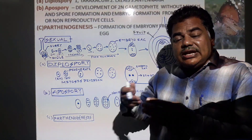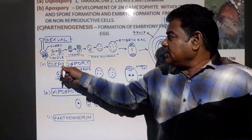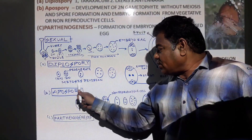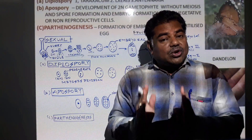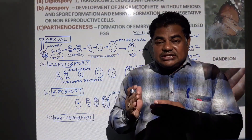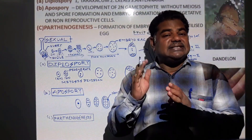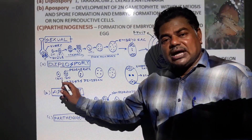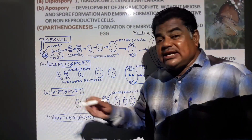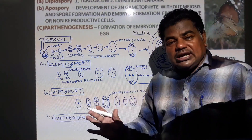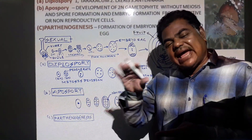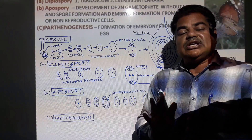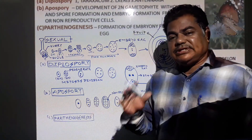Mitosis is equational cell division — the chromosome number does not reduce; it remains as it is. If the cell has 2N chromosomes, when it divides mitotically the daughter cells also have 2N chromosomes. So in Diplospory, diploid nucleus formation takes place, unlike the haploid formation in normal sexual reproduction.